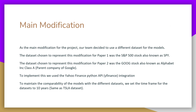For our main modification, our team decided to use a different dataset for the models. For Paper 1, the dataset we chose was the S&P 500 stock, or SPY. For Paper 2, we used Google, which is GOOG. To implement this, we used the Yahoo Finance Python API, which is yfinance. To maintain comparability of the models with the different datasets, we set the timeframe to 10 years, the same as our initial Tesla dataset.